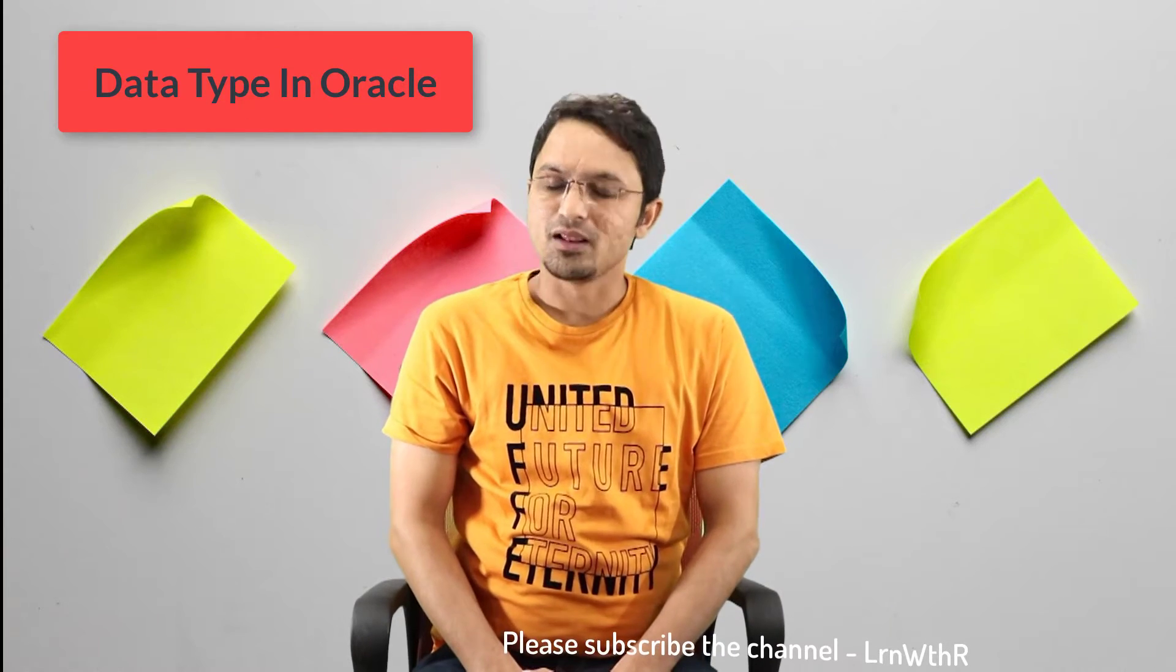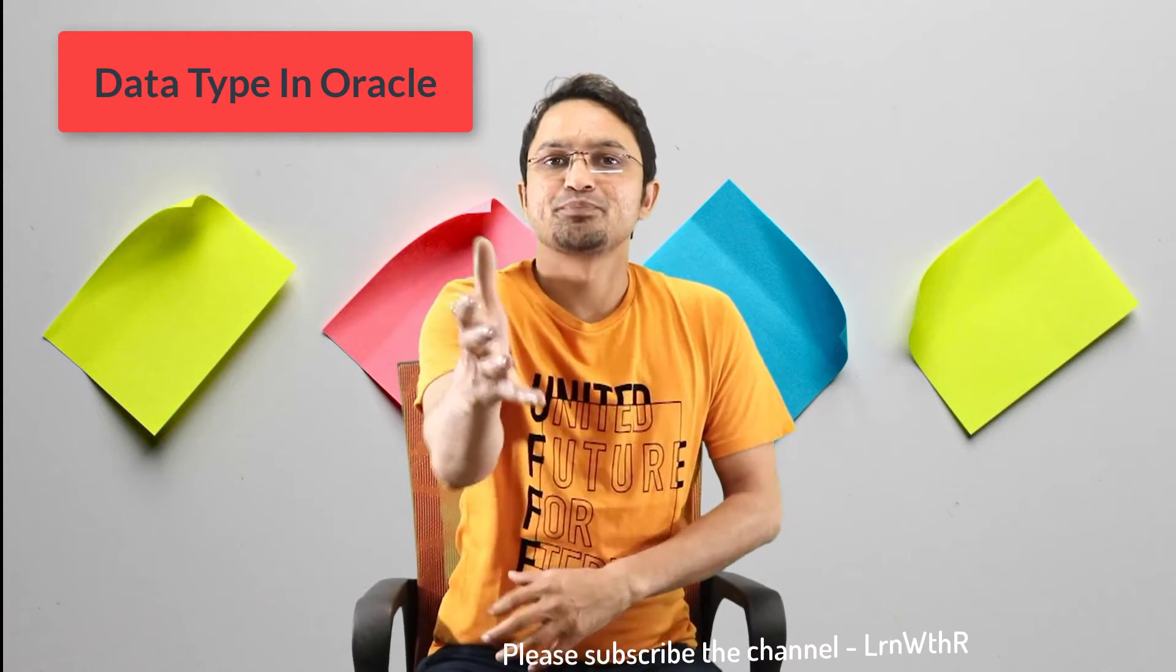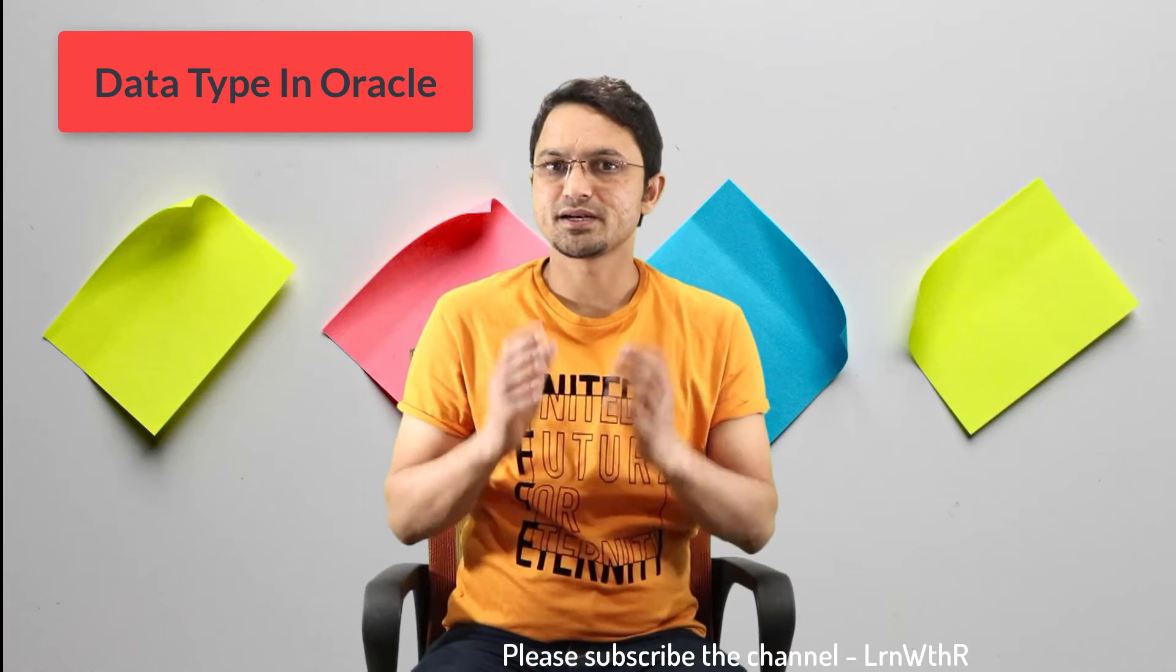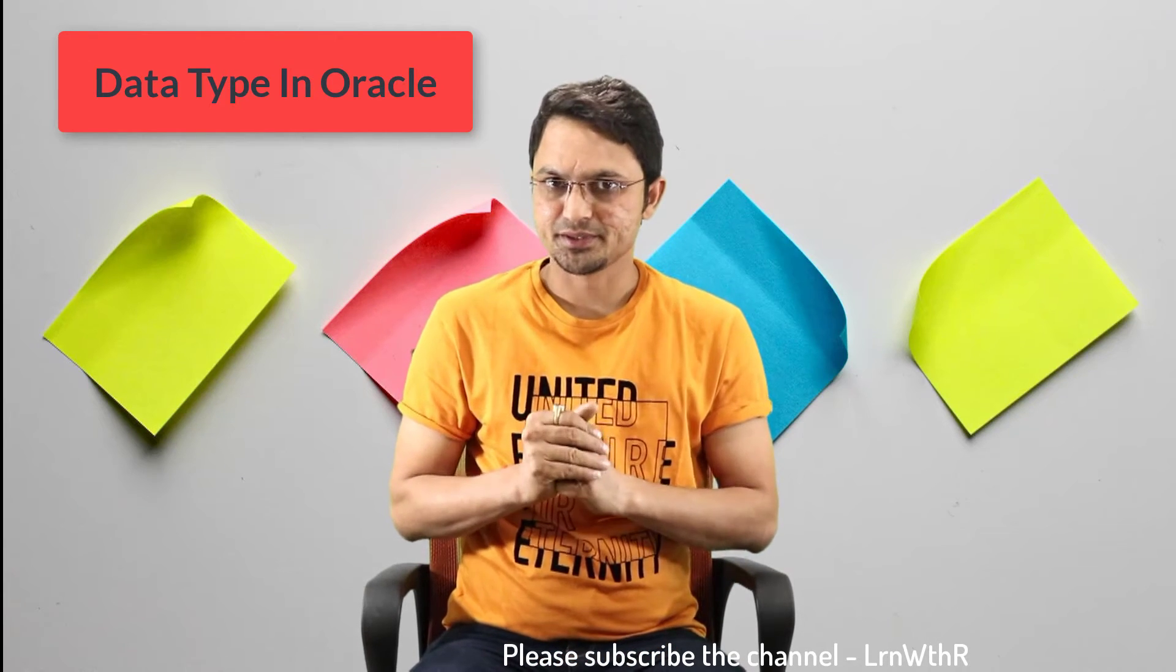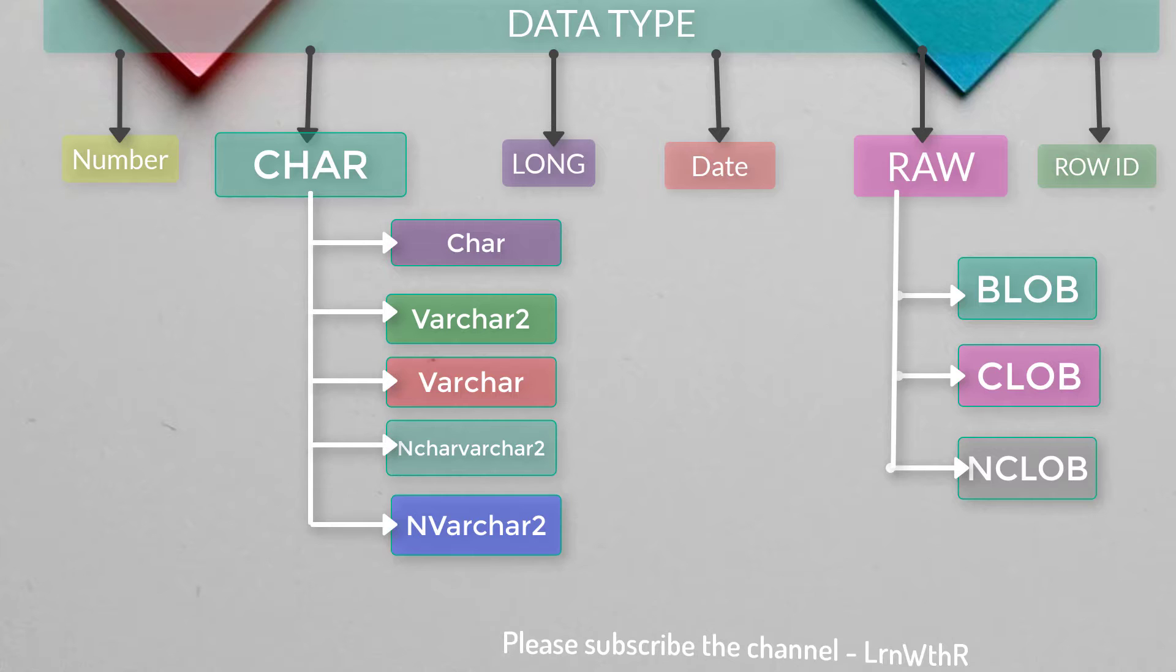Oracle has divided the data type into major five categories as you can see on your screen. The first one is Number, the second one is CHAR. CHAR is again divided into multiple data types.